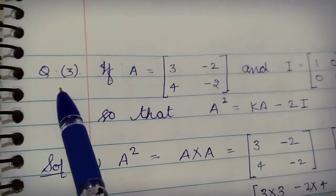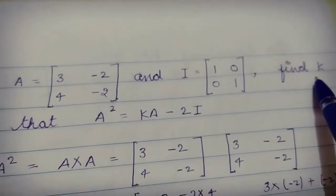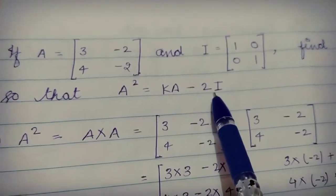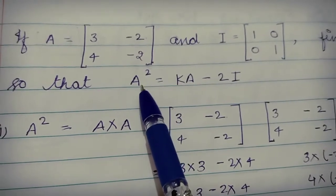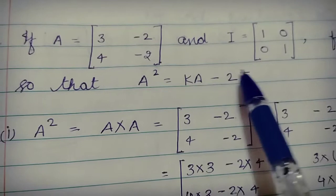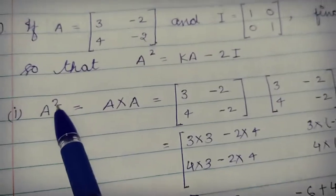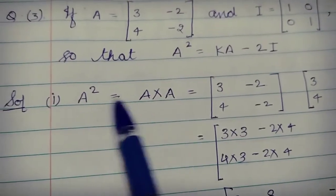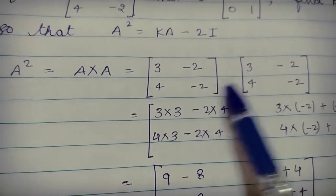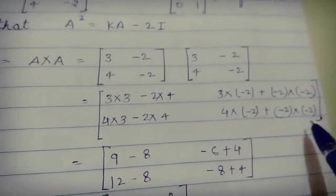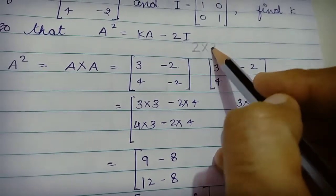In this question, we are given a matrix A and an identity matrix I, and we have to find the value of k. An equation is given with three terms: A squared, k times A, and 2I. First, we evaluate A squared, which means matrix A multiplied by matrix A.